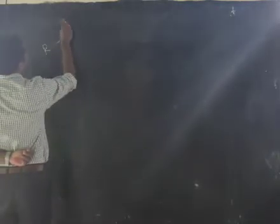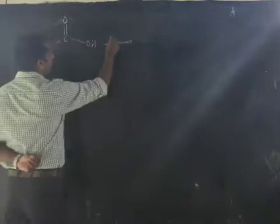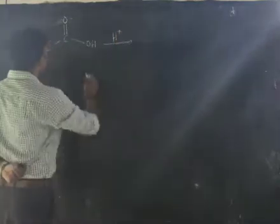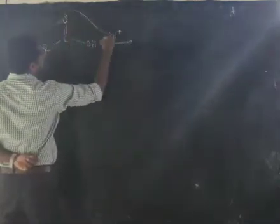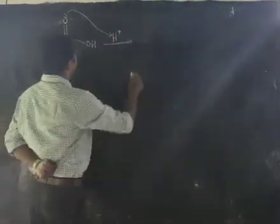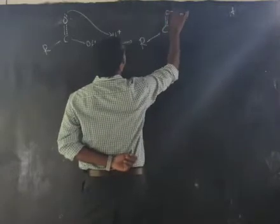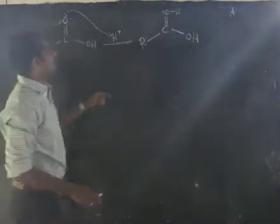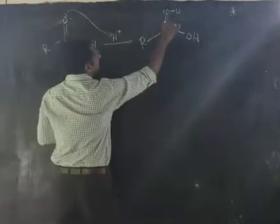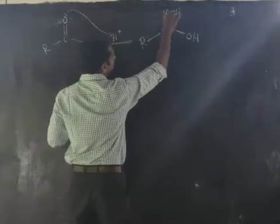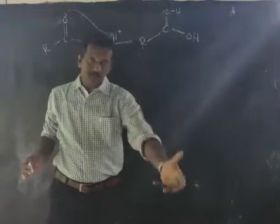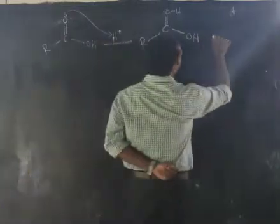We start with carboxylic acid (R-C(=O)-OH). The first step is protonation with sulfuric acid: H⁺ from H₂SO₄ attacks, with the lone pair attacking on H⁺ to give R-C(=O⁺H)-OH. Because of this protonation, the carbon atom becomes more positively charged, since this bond has more tendency to go to oxygen.